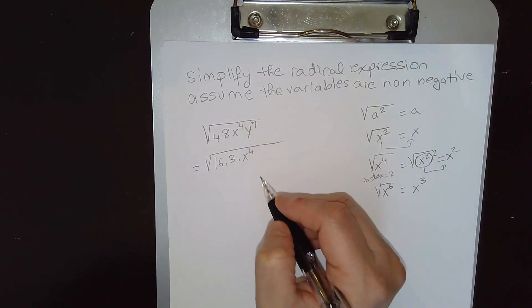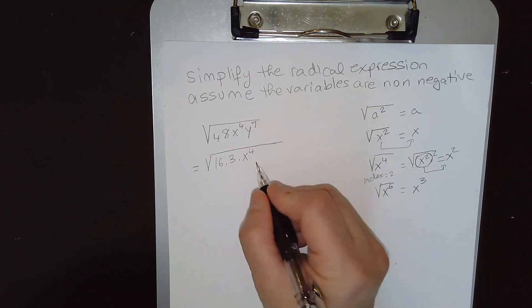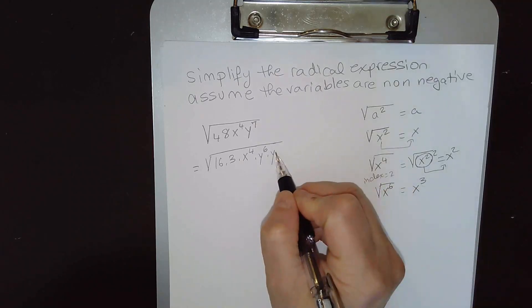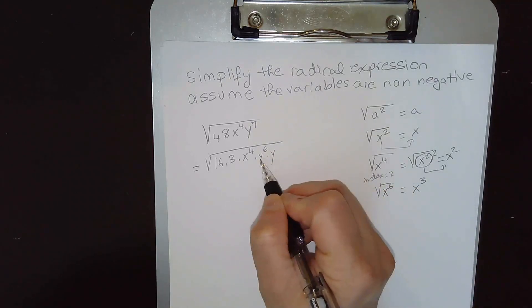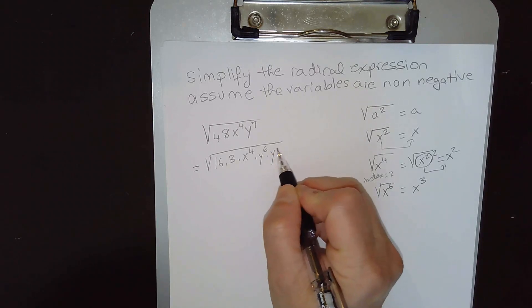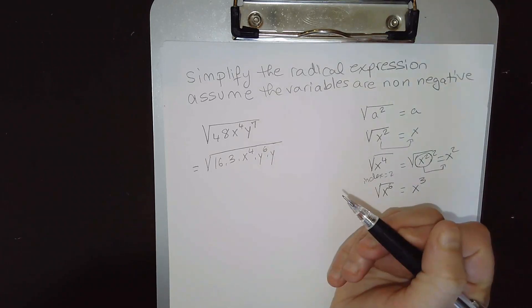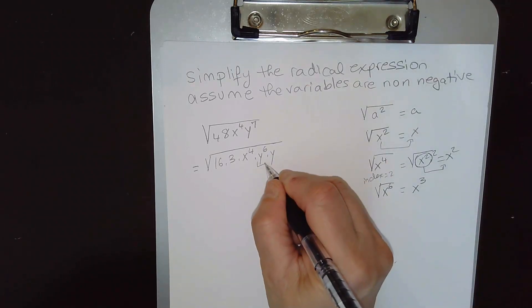What we can do, we can simplify. We can write y⁷ as y⁶, the power is 1 less times y. If you know the laws of exponents, the powers, when you multiply with the same base, the powers will be added. So y⁷ can be written as y⁶ times y. Now why would we do that? Because we know this will come out.